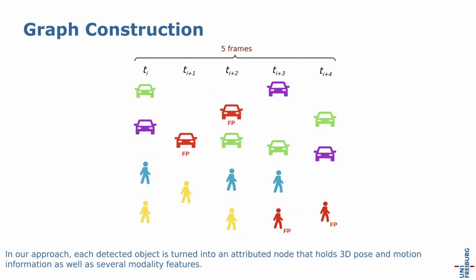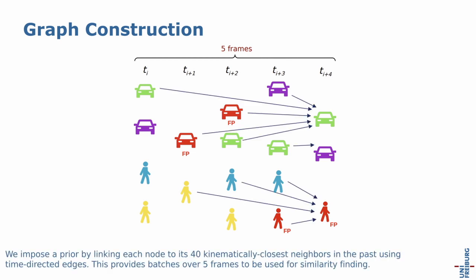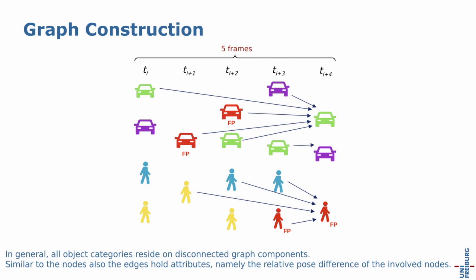In our approach, each detected object is turned into an attributed node that holds 3D pose and motion information as well as several modality features. We impose a prior by linking each node to its 40 kinematically closest neighbors in the past using time-directed edges, providing batches over 5 frames to be used for similarity finding. In general, all object categories reside on disconnected graph components. Similar to the nodes, the edges also hold attributes, namely the relative pose difference of the involved nodes.